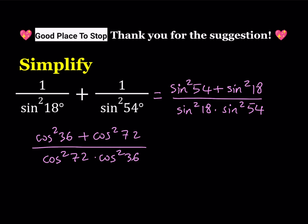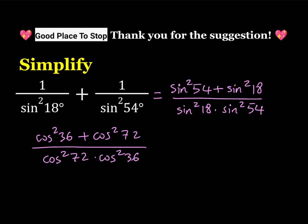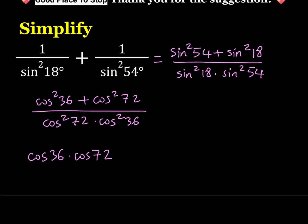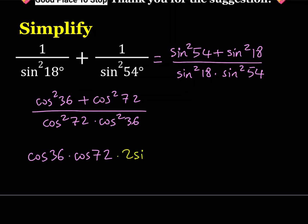I'm going to split this problem into two pieces. First, I'd like to simplify the bottom. To do that, I'm going to work on simplifying cosine 36 times cosine 72. I'm going to take this expression and multiply and divide by two times sine 36 — multiplying and dividing by the same thing won't change the value. And since sine 36 does not equal zero, this is okay to do.